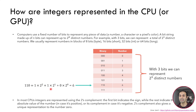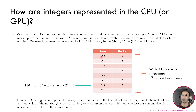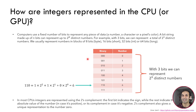In most CPUs, integer numbers are represented using the 2's complement, which means that the first bit of the number indicates the sign — 0 means positive and 1 means negative — while the rest of the bits indicate the absolute value of the number in case it's positive, or its complement in case it's negative. The reason we use the 2's complement is because we want one unique representation for zero, so the plus 0 and the minus 0 have the same binary representation.